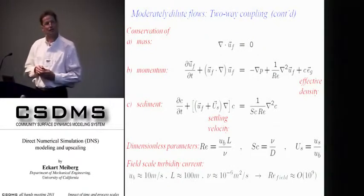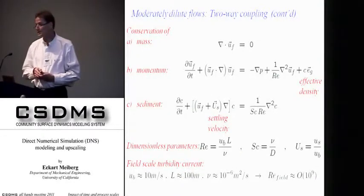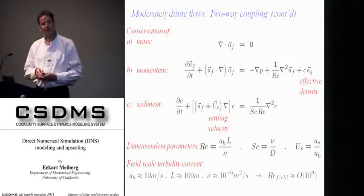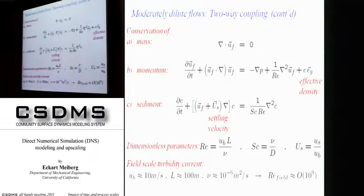Making these equations dimensionless, we obtain three dimensionless parameters: the Reynolds number, which is the combination of a characteristic velocity such as the front velocity, a characteristic length scale such as the height of the current, and the kinematic viscosity of water; the Schmidt number, which is the ratio of the diffusion coefficients in the two equations; and the dimensionless settling velocity. The most important parameter is the Reynolds number. For real field-scale currents — with a front velocity of 10 meters per second, height up to 100 meters, and the kinematic viscosity of water — Reynolds numbers in the field can be up to 10 to the 9th. Please keep that in mind.